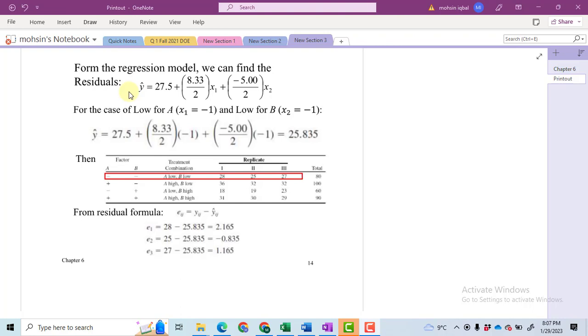So y bar, this is basically the predicted value of y, this bar is used for prediction, is equal to 27.5. We get this 27.5 by taking the average of all 12 observations that we have studied before, plus 8.33 divided by 2.